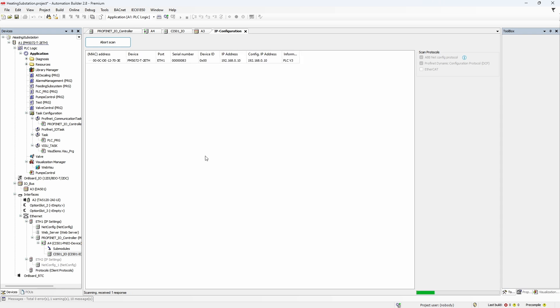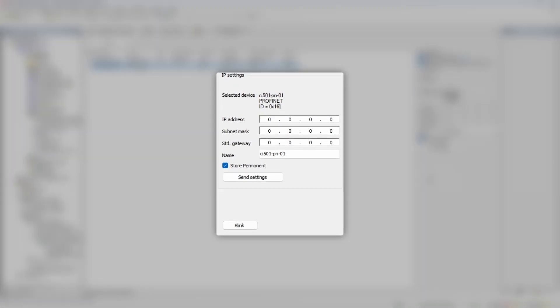Of course, Automation Builder will find PLC itself, but after a while CI501 station will be shown in the list as well. If you select CI501 device in the list, on the right you will see IP settings section, where beside IP settings, you can specify I.O. device name and send it to the device by clicking Send Settings.